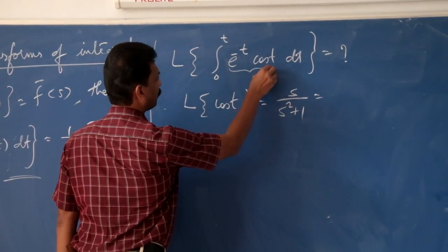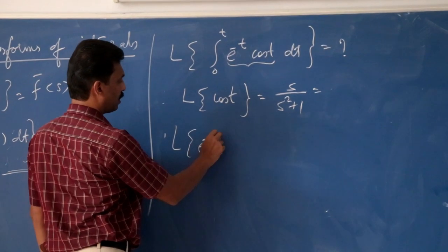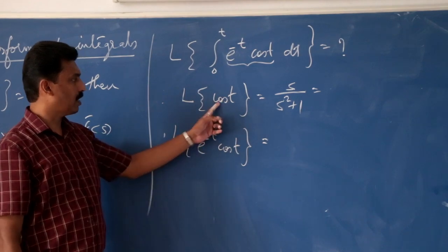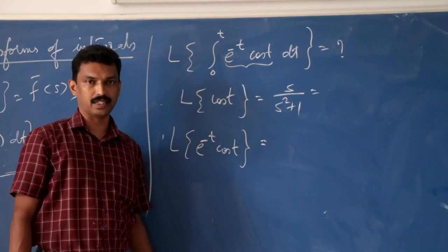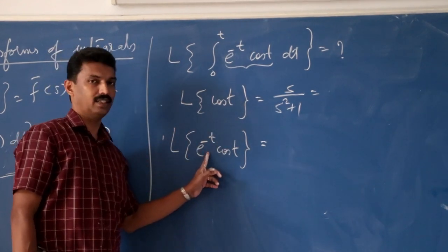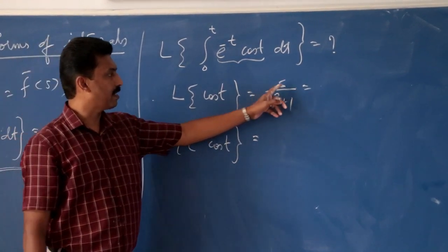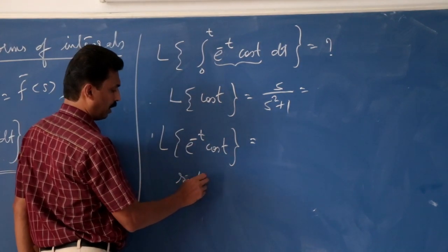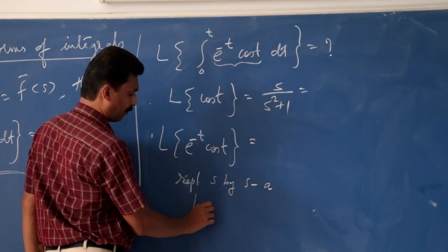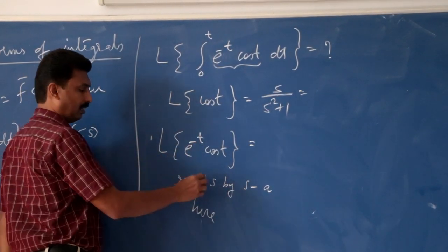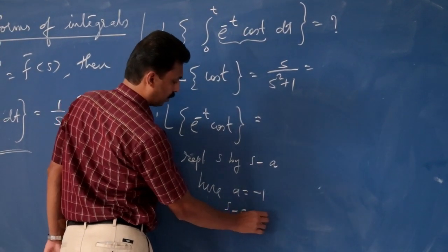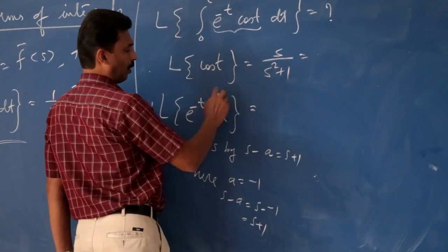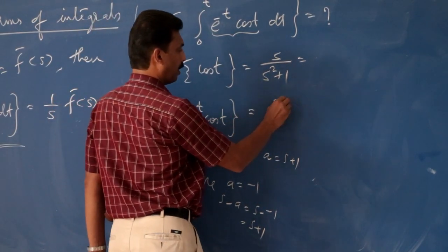Next, we find the Laplace transform of e^(−t)·cos t. Using the first shifting property, the Laplace transform of e^(at)·f(t) is obtained by replacing s with s − a in F̄(s). Here a is the coefficient of t, which is −1, so s − a becomes s − (−1) = s + 1. Therefore the Laplace transform of e^(−t)·cos t equals (s + 1) divided by (s + 1)² + 1.